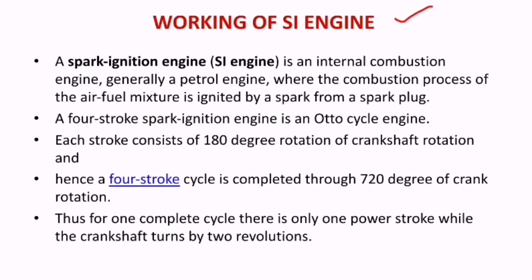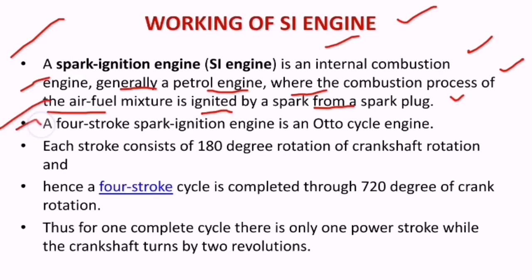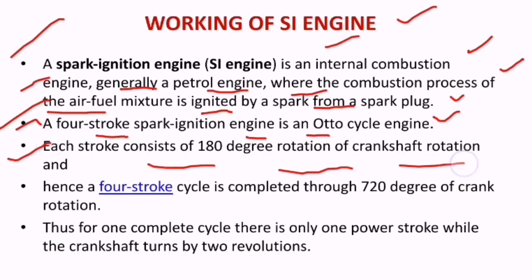Working of SI engine: a spark ignition engine is an internal combustion engine, generally a petrol engine, where the combustion process of the air-fuel mixture is ignited by a spark from a spark plug. A 4-stroke spark ignition engine is an Otto cycle engine. Each stroke consists of 180 degree rotation of the crankshaft, hence the 4-stroke cycle is completed through 720 degrees of crank rotation.